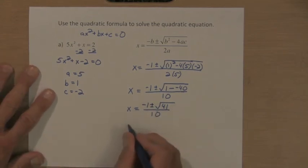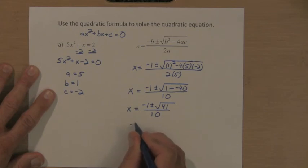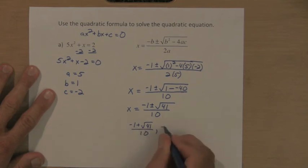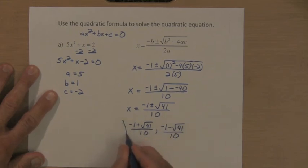So those are my two solutions. One of them is negative 1 plus the square root of 41 over 10. That's one of my answers. And my other solution is negative 1 minus the square root of 41 over 10.